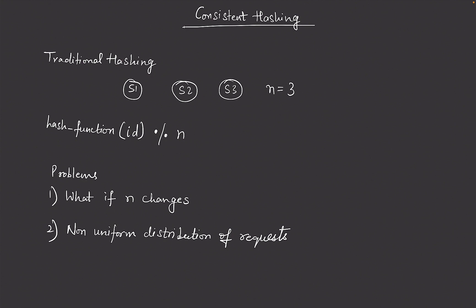In the introduction video we talked about load balancers, and one of the problems load balancers have to deal with is how to decide which server to choose. If you have any problems understanding these terms, I recommend checking out my introduction to system design video. Let's say we have three servers: server one, server two, server three, and a load balancer has to decide which server to send the request to.